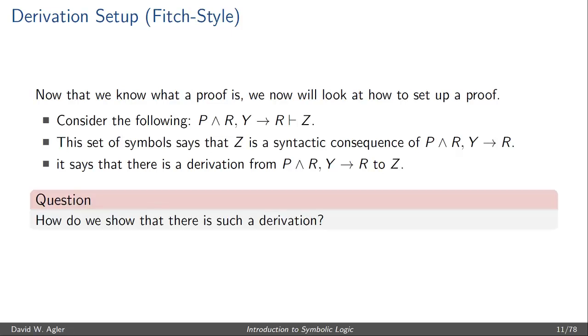The question is: how do we show this derivation? How do we actually do the proof? How do we fill in the middle part — that is, the formulas necessary that concludes with Z?